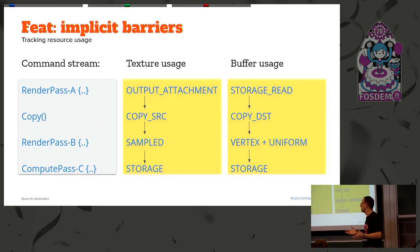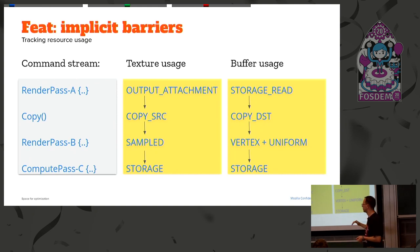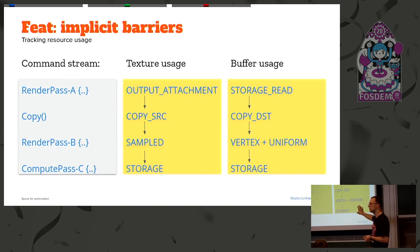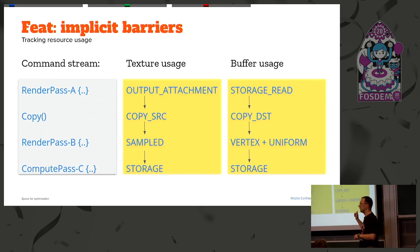Implicit barriers: here you can see four different pieces in the command stream, and the usage of texture and buffer changes between operations. Some usages can be combined — read-only usages like in D3D12 — but mutable usages cannot be combined. If you try to combine them within the render pass, which is the synchronization scope for us, we will trigger an error.